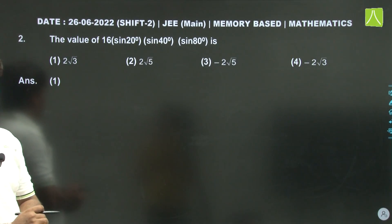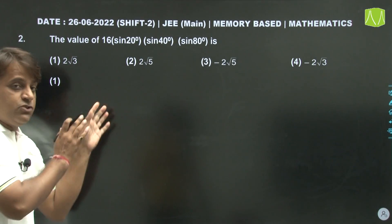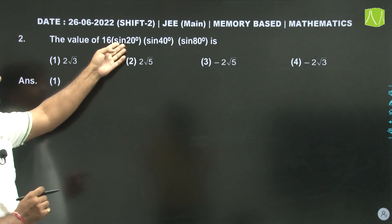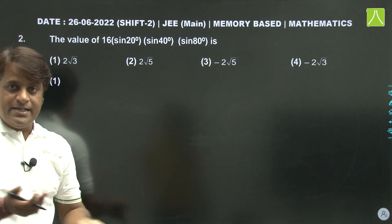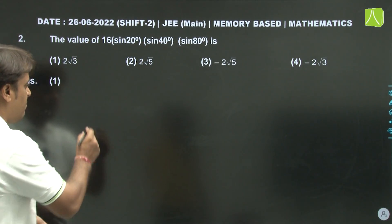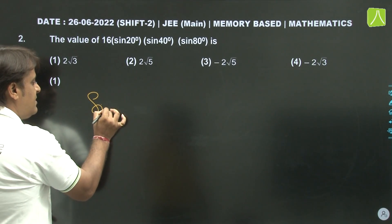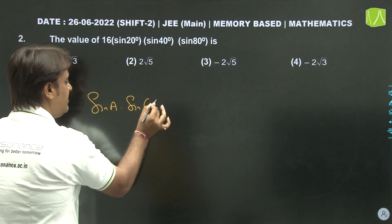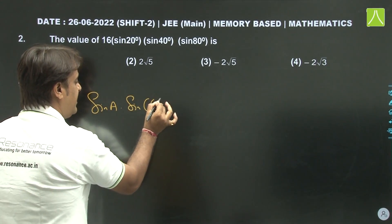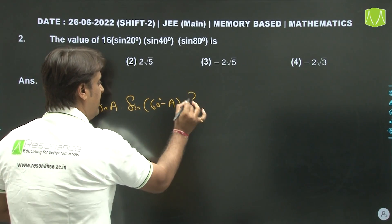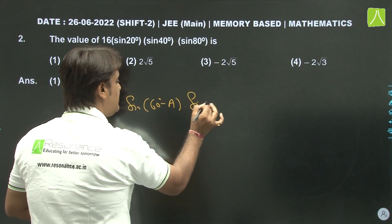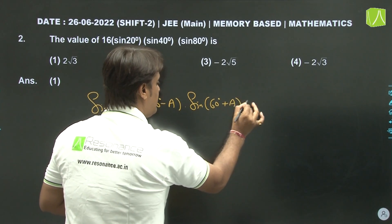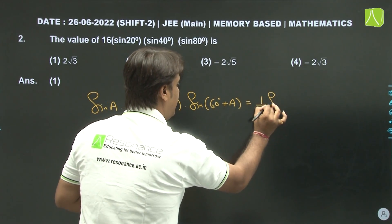Second question — this is the easiest question of this test paper. We need sin20° times sin40° times sin80°. The standard formula is: sinA × sin(60°-A) × sin(60°+A) = (1/4) sin3A.